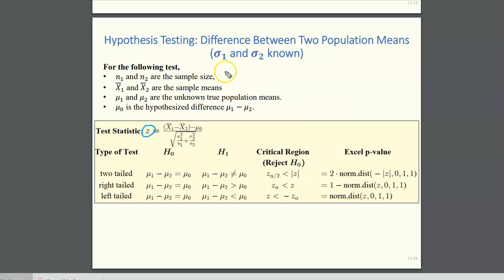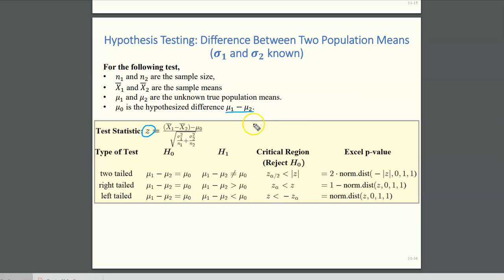For this hypothesis test, n1 and n2 are your sample sizes taken from your two populations. x1-bar and x2-bar are the sample means. mu1 and mu2 are the unknown true population means that you want to compare, and mu0 is the hypothesized difference between the population means mu1 and mu2.